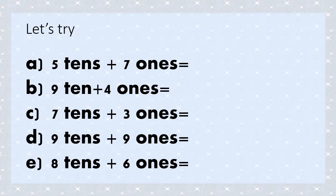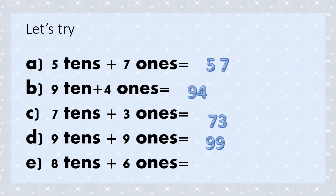Let us try this one. If we put together 5 tens and 7 ones, how many do we get? We have 57. If we put together 9 tens and 4 ones, we will get 94. If we put together 7 tens and 3 ones, we will get 73. If we put together 9 tens and 9 ones, we will get 99. If we put together 8 tens and 6 ones, we will get 86.